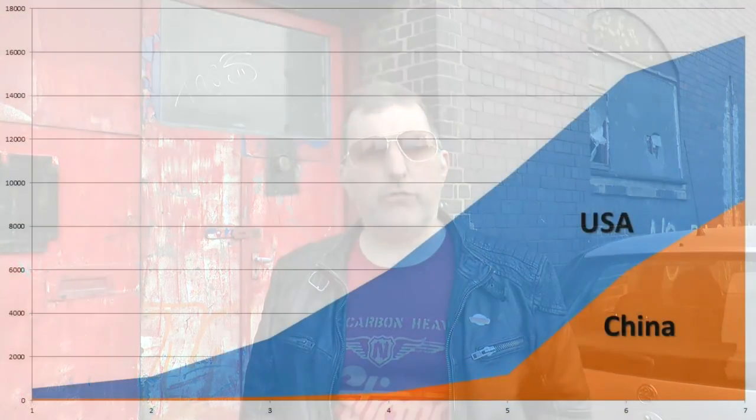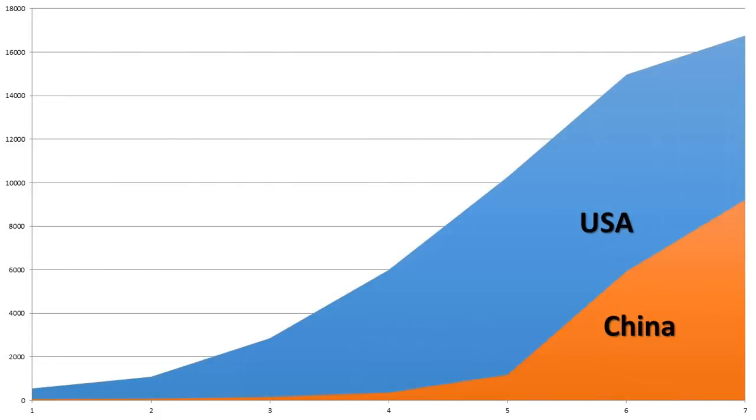Something similar applies in geopolitics. In 1913, Germany's economy had reached just over half that of the British Empire, and the next year saw the outbreak of World War I. But during the Cold War, the Soviet economy was about a third of that of the United States — enough for tension, but not open conflict. Today, China's economy has reached the critical halfway mark compared to the US, making war become likely.